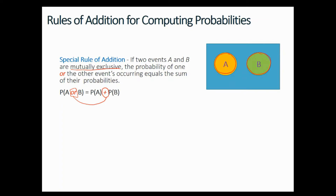These are events that are not happening at the same time. For example, if you're coming to class, you are either on time or you are late — you cannot be on time and late at the same time. Either you do one or you do the other. So when you have the probability of one event or another, you add them up.